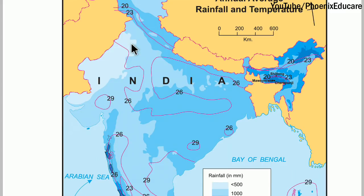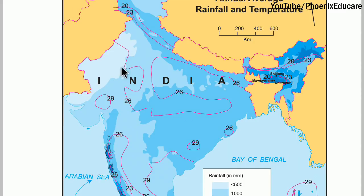In this part, Rajasthan is a desert. Because the Aravalli mountains are parallel to the direction of the monsoon winds, the monsoon winds travel alongside the Aravalli mountains without being blocked. So the rainfall does not fall on Rajasthan, and Rajasthan is getting less rainfall because of the Aravalli mountains.